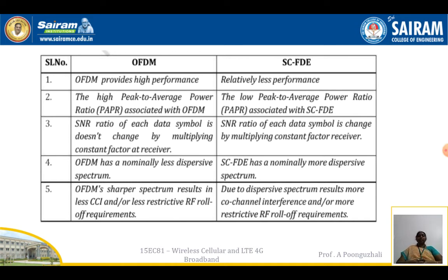Comparing OFDM and single carrier FDE: OFDM provides high performance while single carrier FDE performs relatively less. OFDM has a high peak-to-average power ratio, whereas SC-FDE has a low peak-to-average power ratio. In OFDM, the signal-to-noise ratio of each data symbol does not change by multiplying a constant factor at the receiver, but in SC-FDE it does change. OFDM has less dispersive spectrum with a sharper spectrum, resulting in less co-channel interference or less restrictive RF roll-off requirements, whereas SC-FDE has more dispersive spectrum resulting in more co-channel interference.